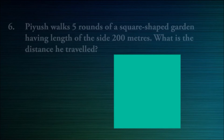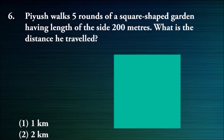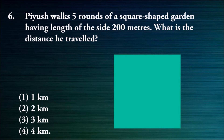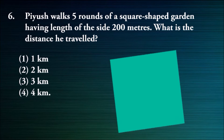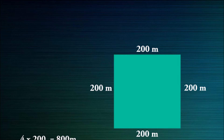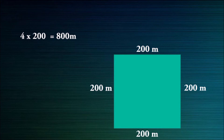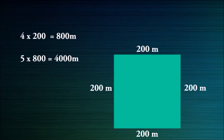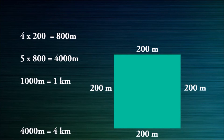Question number six: Piyush walks five rounds of a square-shaped garden having a side length of 200 meters. What is the distance he traveled? Options: 1 kilometer, 2 kilometer, 3 kilometer, or 4 kilometer. Perimeter of the square is 4 times the side: 4 times 200 equals 800 meters. For 5 rounds: 5 times 800 equals 4000 meters. Since 1000 meters equals 1 kilometer, 4000 meters equals 4 kilometers. Fourth option, 4 kilometer, is the correct answer.